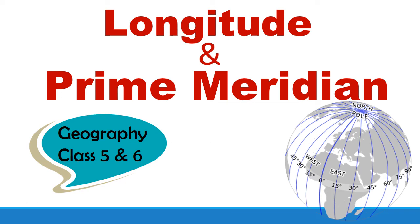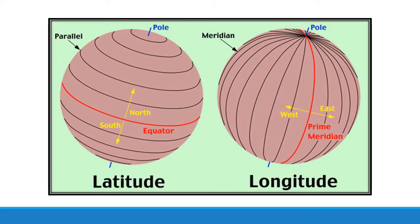Hello friends, welcome to Top Brain GK. Today we will discuss longitudes and prime meridian for class 5th and 6th. In my previous video I already taught you about latitudes — these are parallel lines running east to west, and they divide the earth into two parts: the northern and southern hemisphere. Now in this video we will discuss what are longitudes.